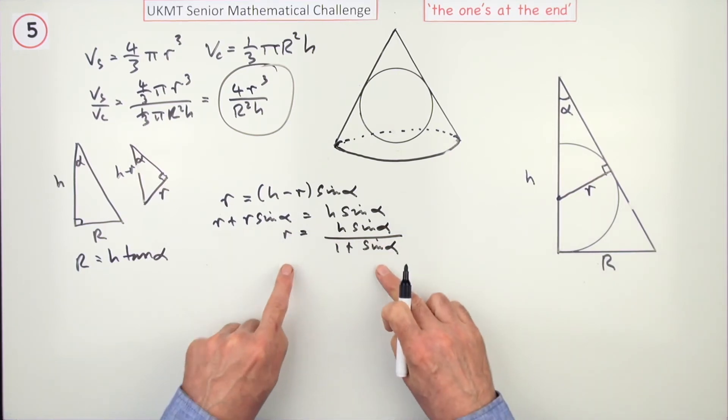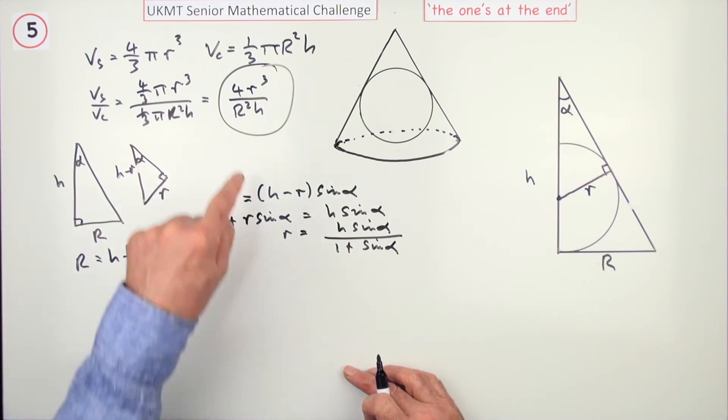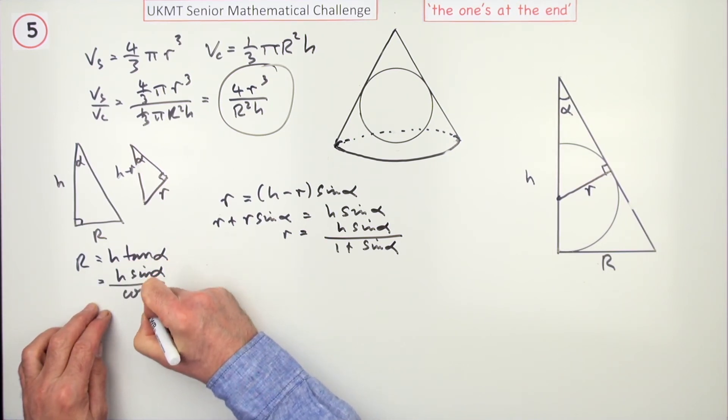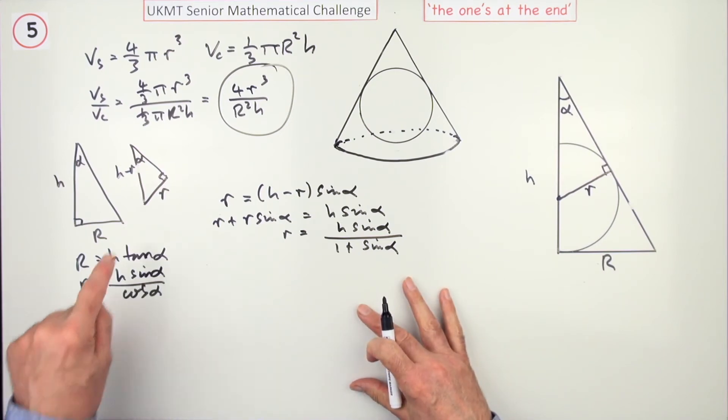Just pop that here now. There you are. There's two expressions replacing R in terms of H, and big R in terms of H, which you can just feed into there. Maybe I'll just rewrite that as H sin α over cos α, since the solutions didn't have any tangents in it. So the plan is now, just pop them back into that, and tidy it up, and you should be there.